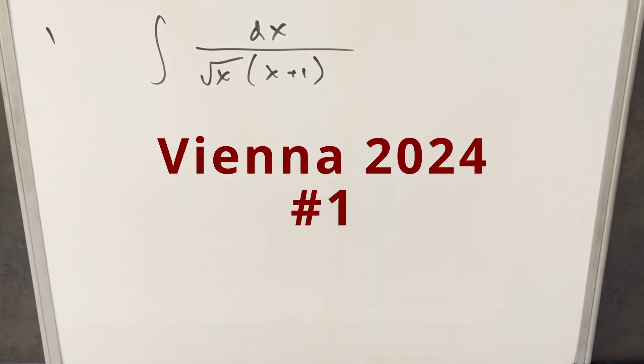Okay, we have a really quick integral. This one's from the Vienna Integration B 2024 problem 1. We have the integral of 1 over square root of x times x plus 1 dx.